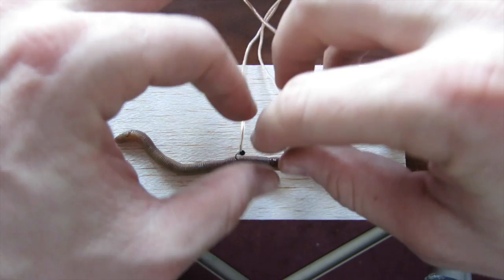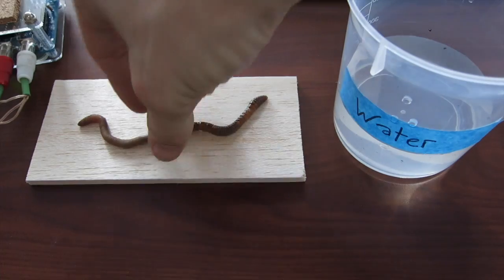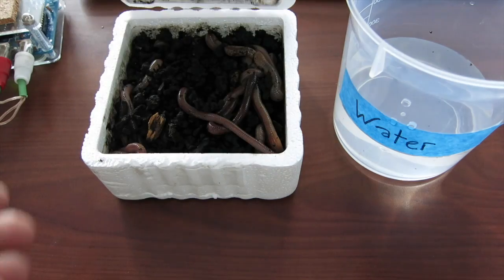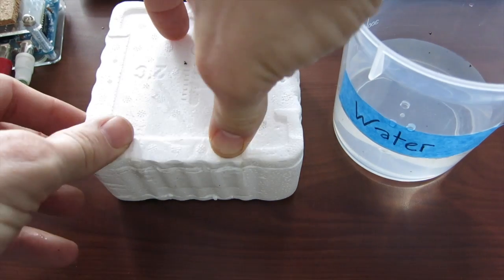And we are done with the worm for today. Remove the electrodes, place the worm briefly in the water solution to rehydrate it, and return it to its box with its other earthworm companions.